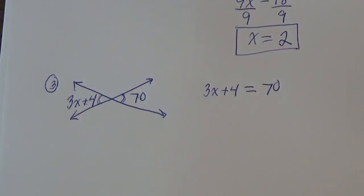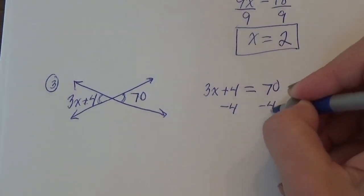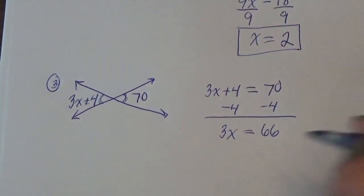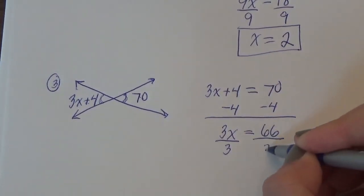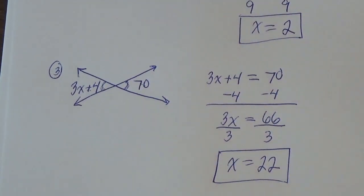So you can kind of look at it that way. Alright, so let's solve it. Let's subtract 4. We're down to 66. Divide by 3. And we're down to 22.